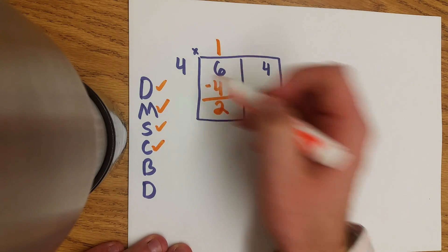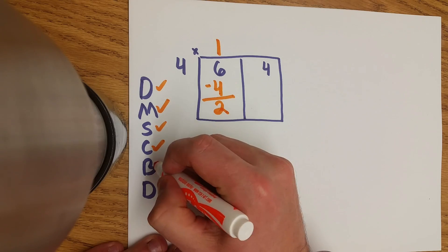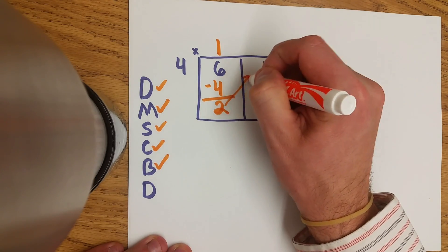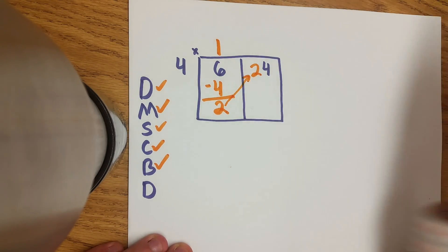Now we check that 2. Is 2 less than 4? Yes it is. Now we can bring that 2 up to get our new number 24.